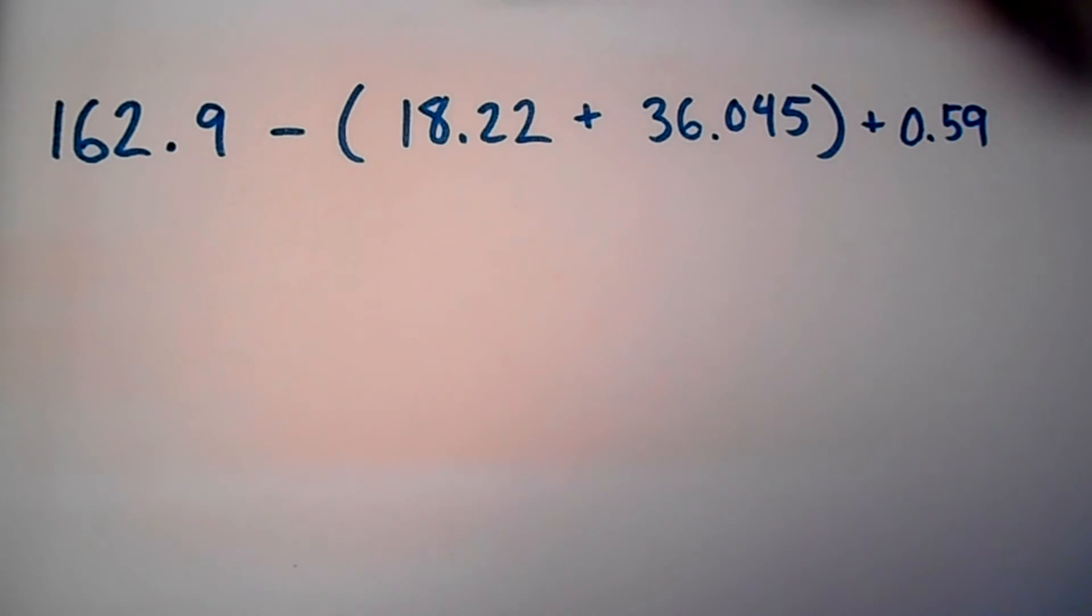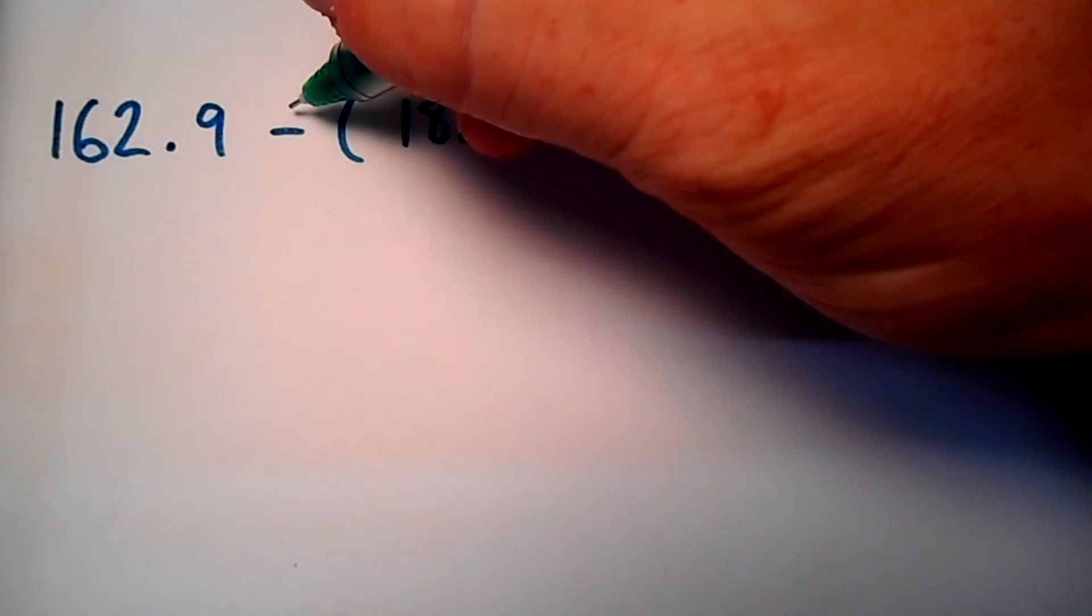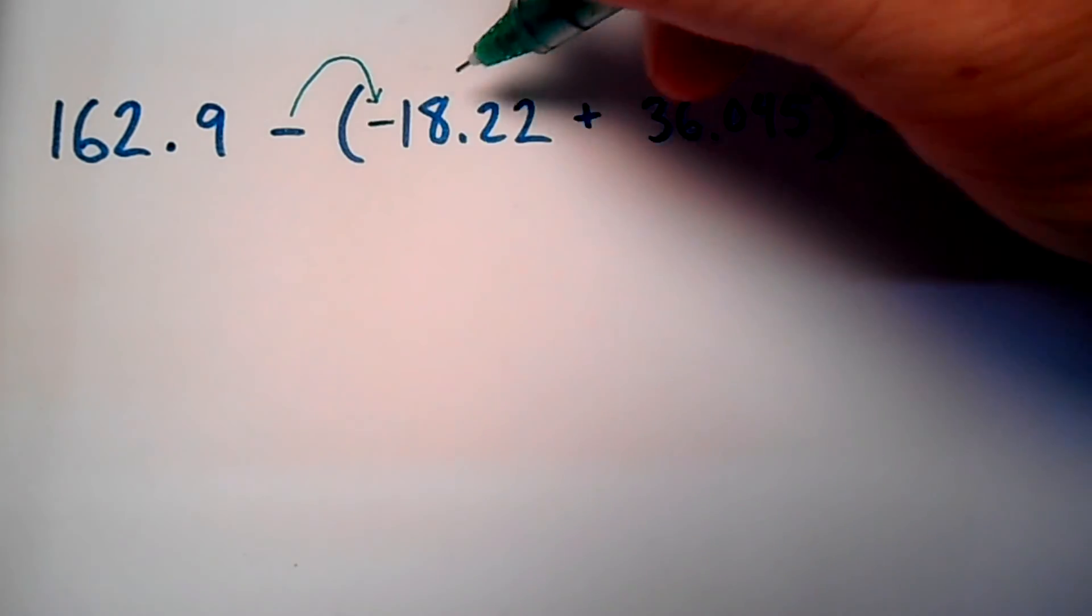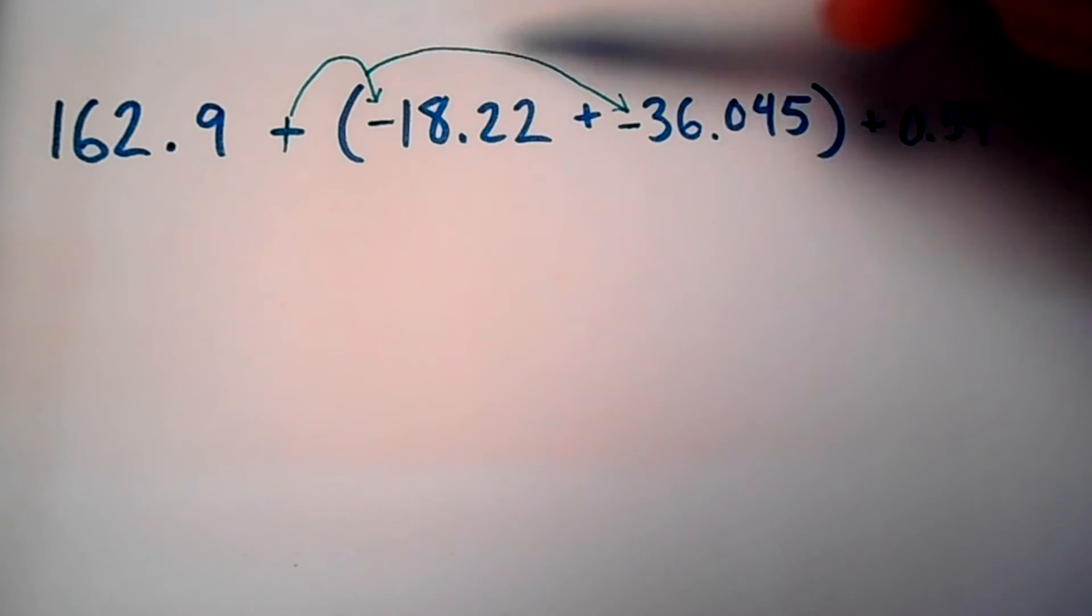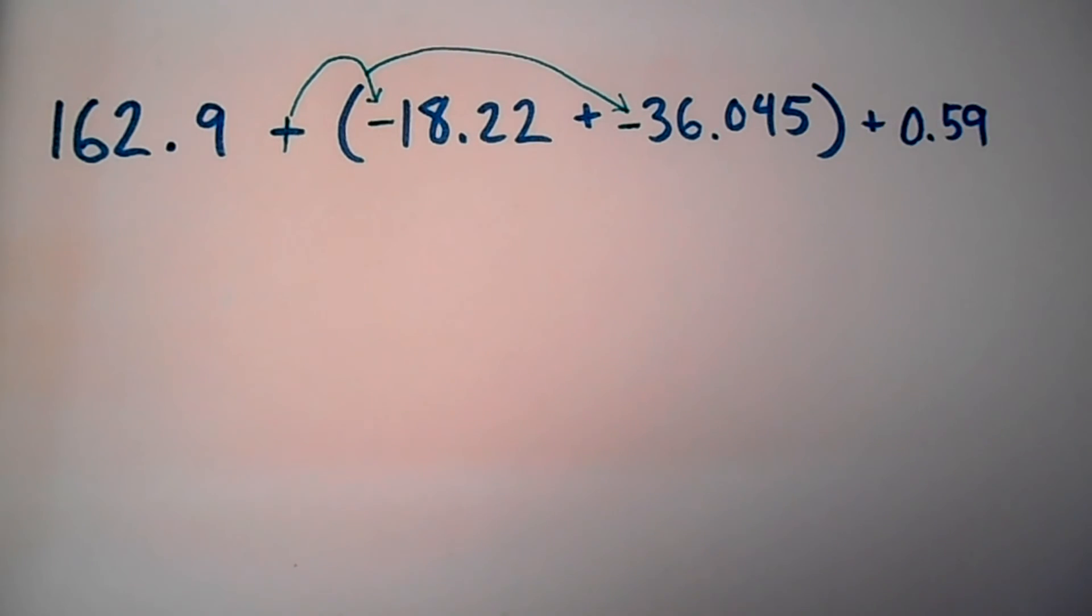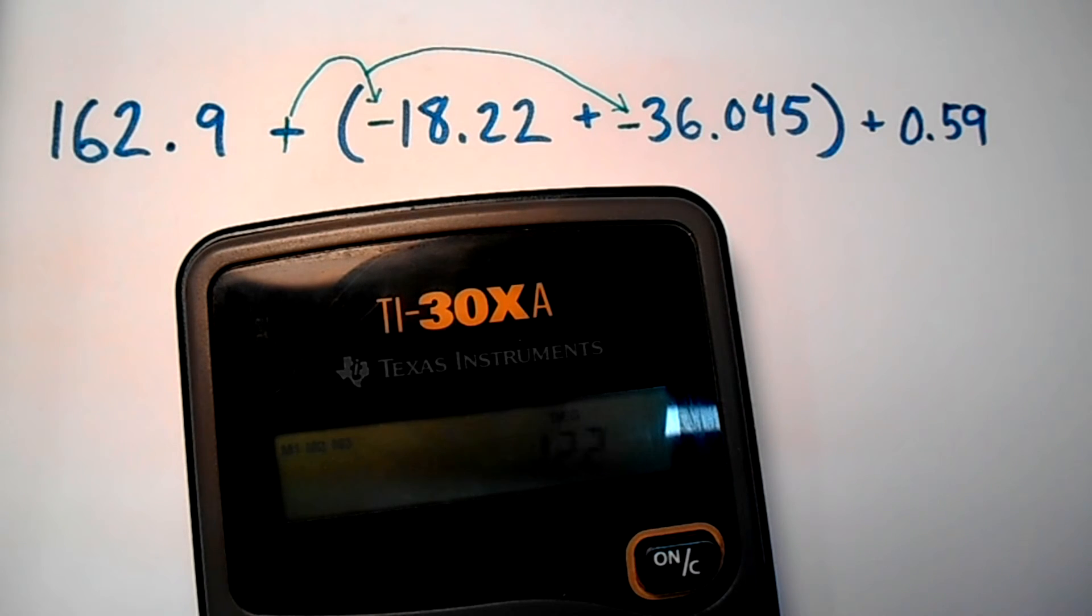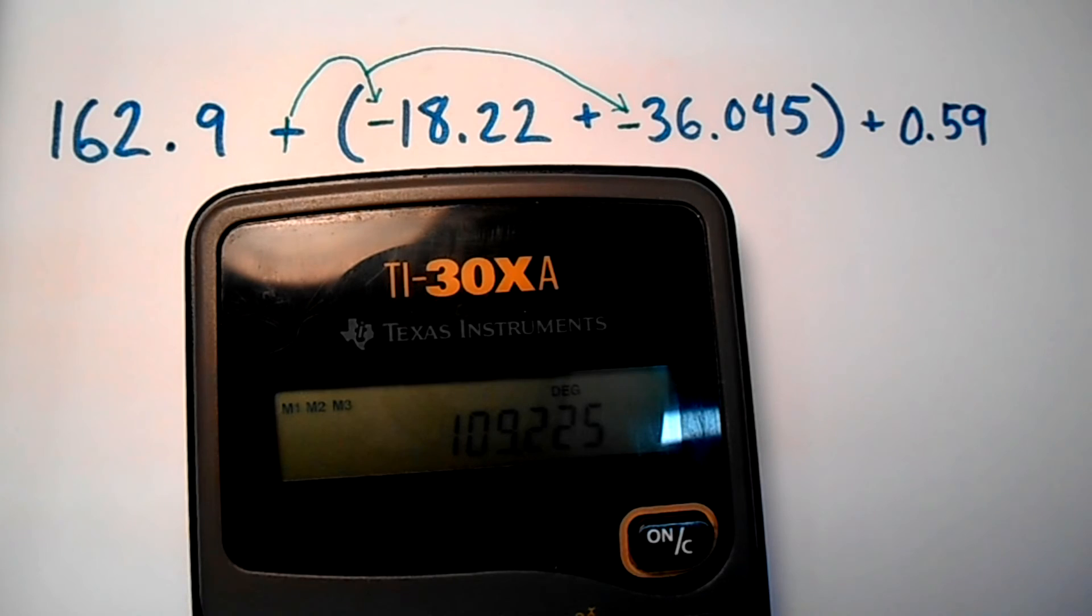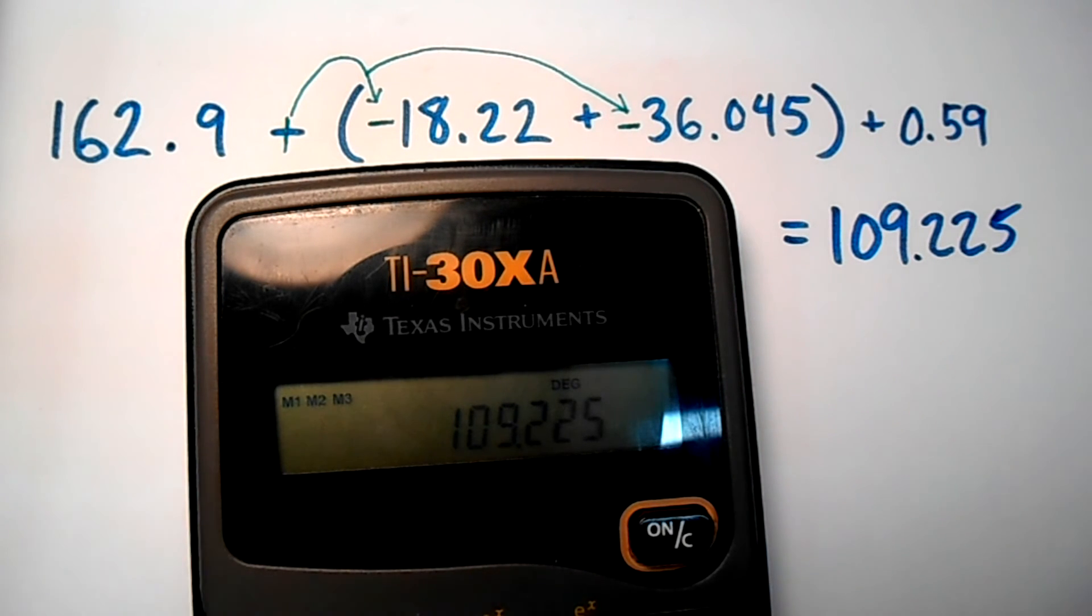Alright. In this case with the parentheses, this does kind of mean something because I'm subtracting whatever's in this quantity. But keep in mind, everything in this problem is all addition subtraction, so it's all within the same rules. I'm not going to do any in-between rounding. What I am going to do is distribute this negative sign to the things in the quantity. So this is a negative and this is a negative. I'm adding a negative 18.22 and a negative 36.045. So I type this out: 162.9 - 18.22 - 36.045 + .59. And we've got, for a raw answer, raw value, 109.225. And that is raw.